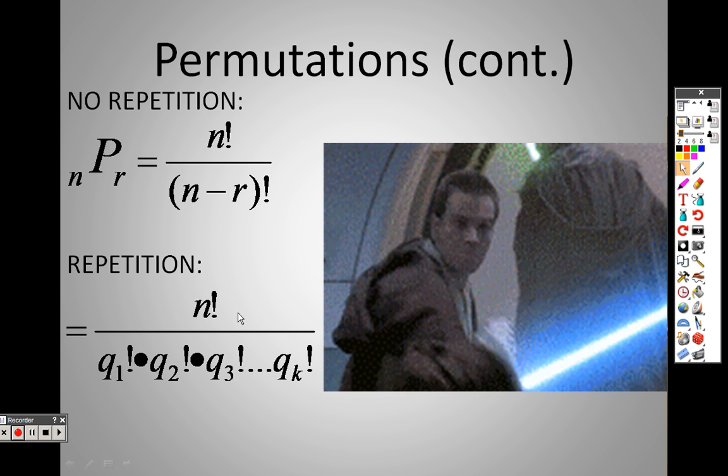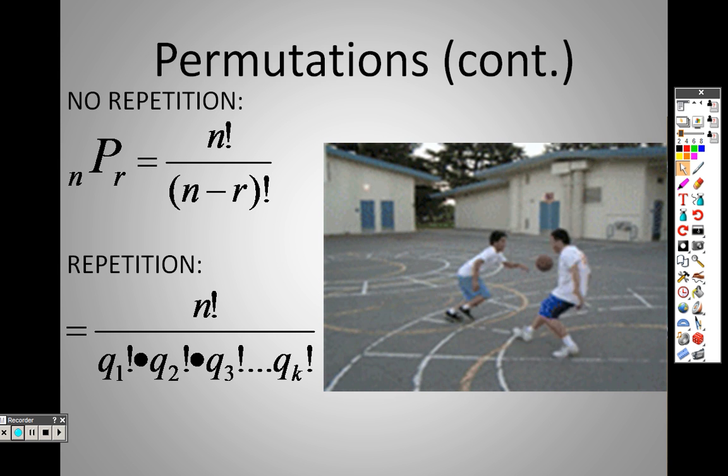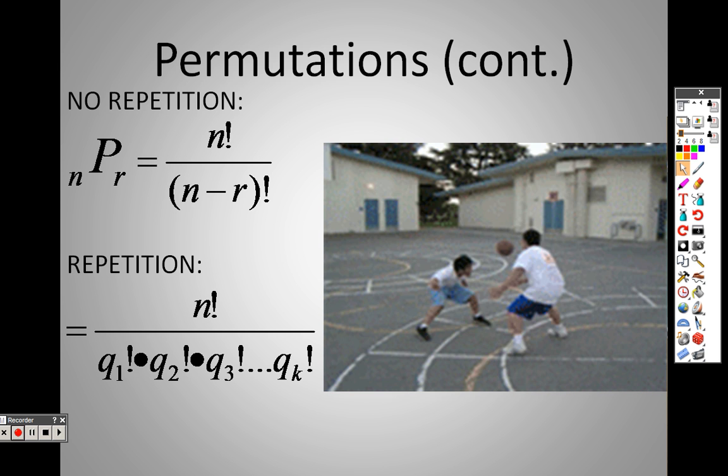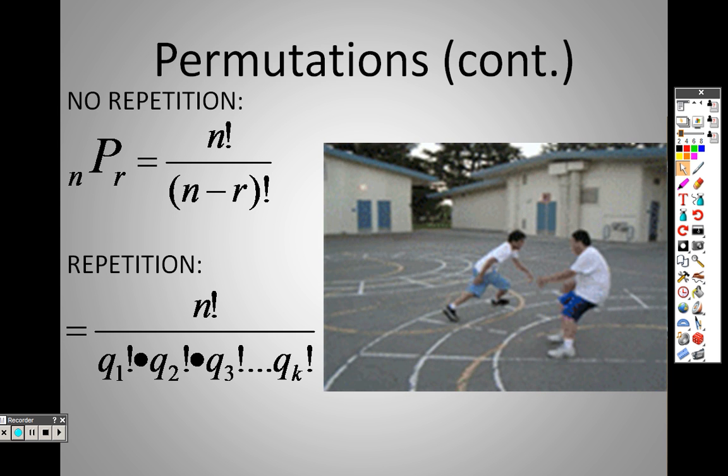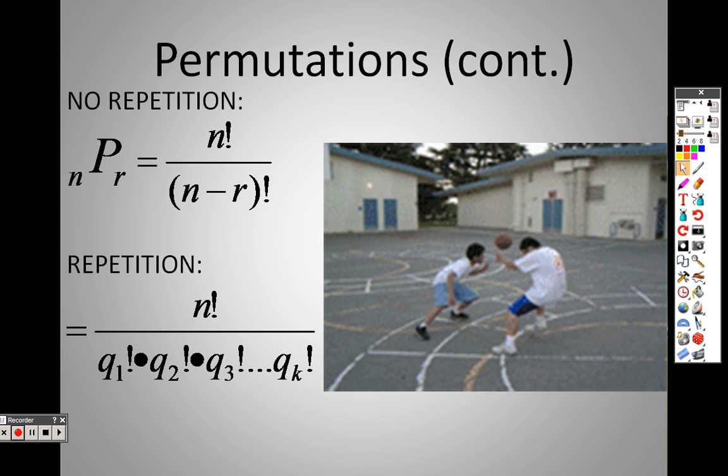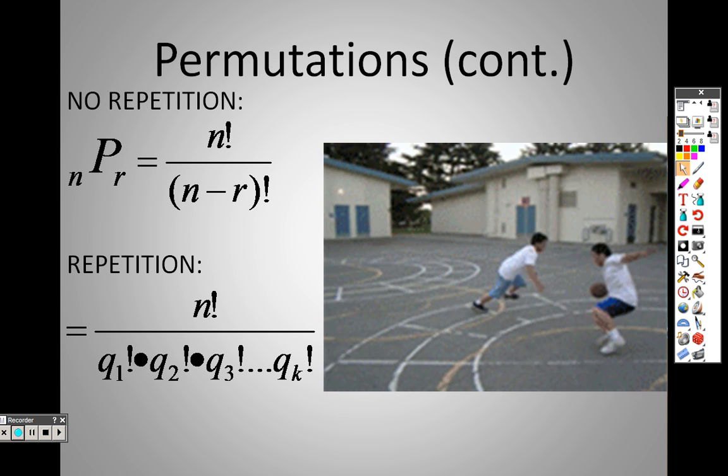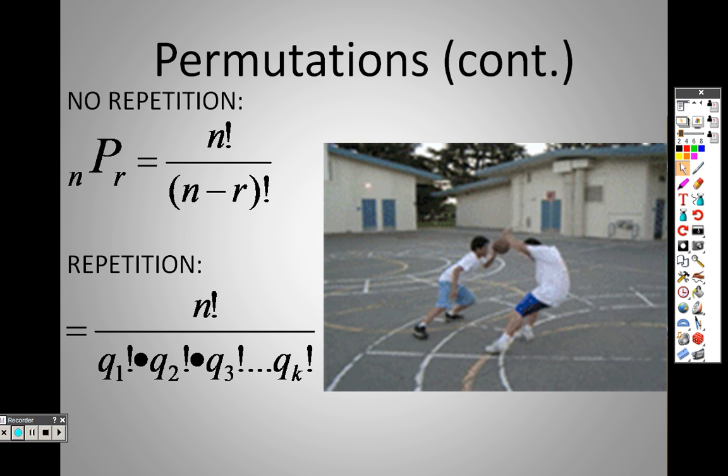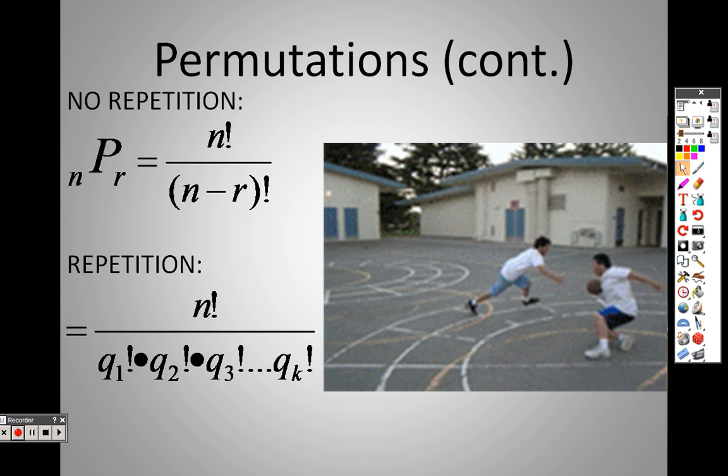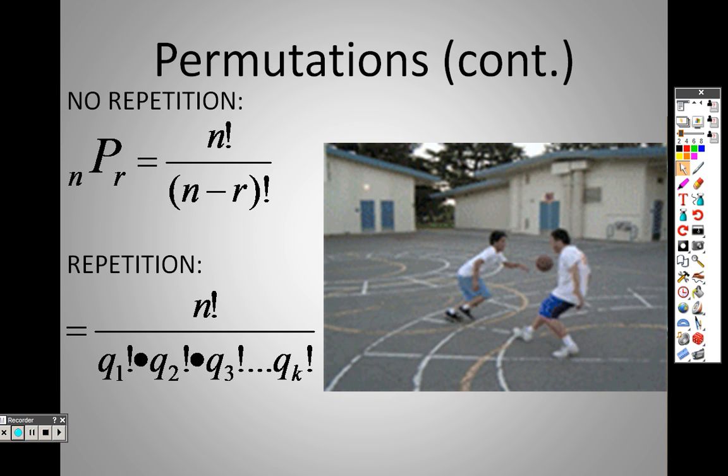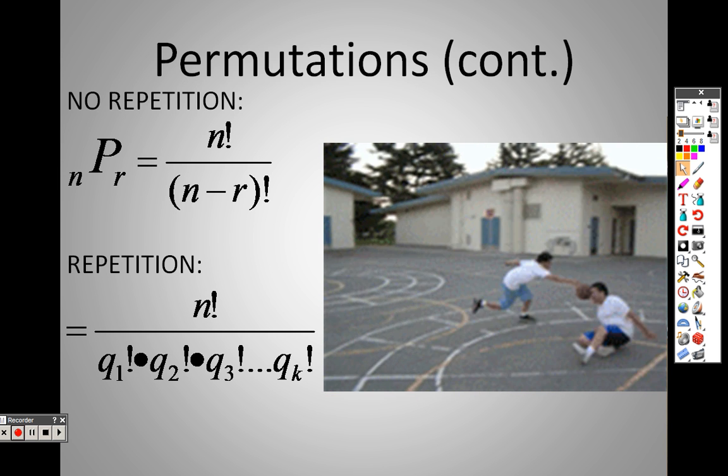Here is the one for repetition. We use that formula for permutations when you're rearranging stuff that has duplicates. We'll get to examples of that when we start talking about rearranging words. It's N factorial over all those Q factorials on the bottom—I could have 20 different things that are alike or just one thing that's alike.